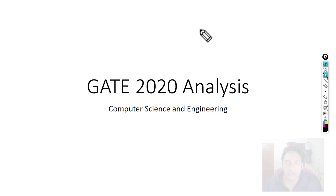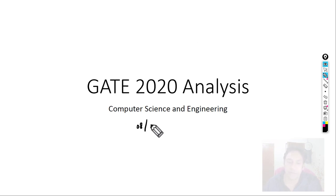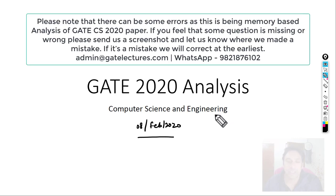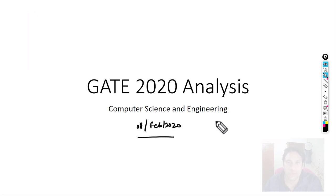Hello everyone. In this session we will be doing an analysis of the GATE 2020 Computer Science examination. This examination happened on 8th February 2020. We will be providing solutions to all the questions asked in the examination. The questions we are writing here are memory-based questions — some students sent in questions from their centers, and we also know some questions that came in the examination. We will be doing this analysis of GATE 2020 as well as the solutions.